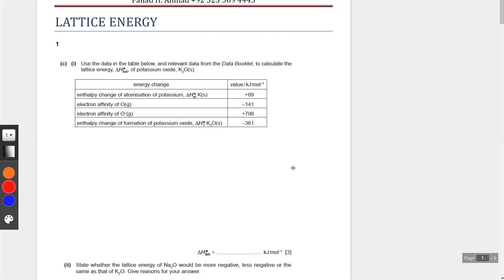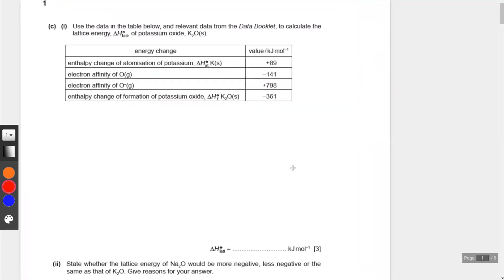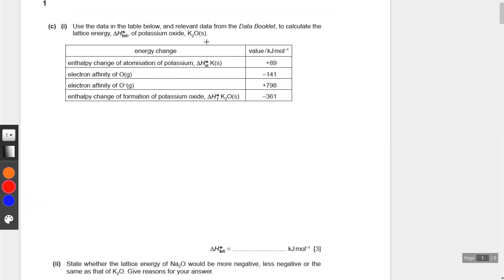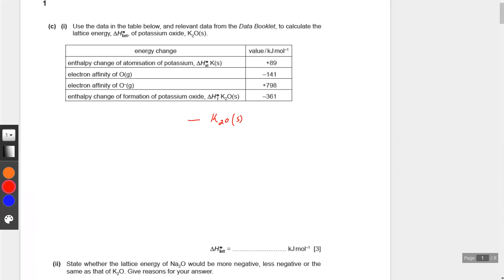The first question states: use the data from the data booklet to calculate the lattice energy of potassium oxide. We have the process of forming potassium oxide from its elements, which would be potassium plus oxygen gas.